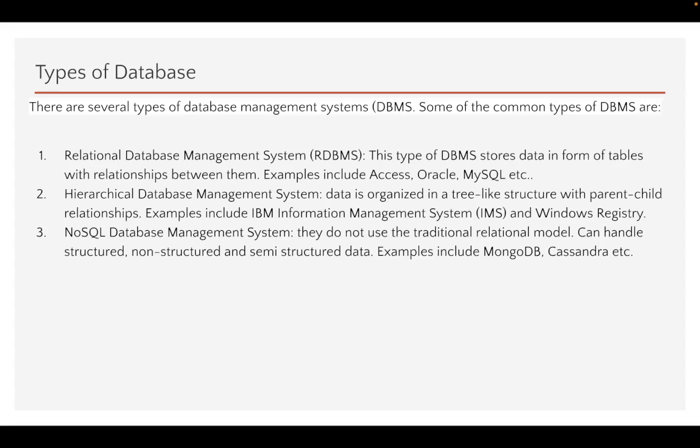The hierarchical database management system organizes data in a tree-like structure with a parent-child relationship between data. An example is the Windows Registry, where information is stored in keys and values organized in a hierarchical fashion.